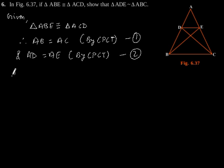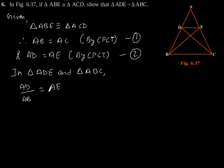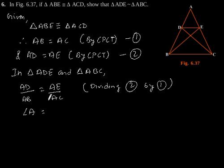Now in triangle ADE and triangle ABC, we will get AD by AB is equal to AE by AC by dividing equation 2 by equation 1. Angle A is equal to angle A since it's a common angle.